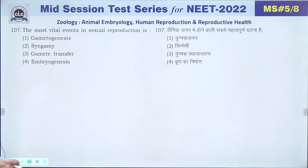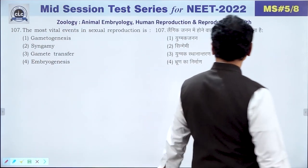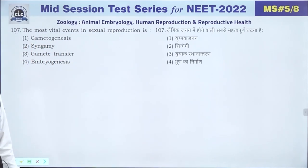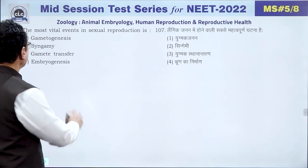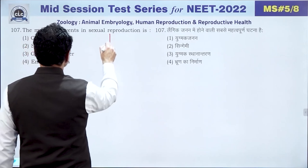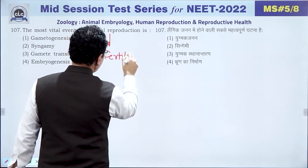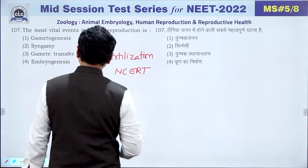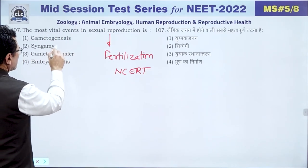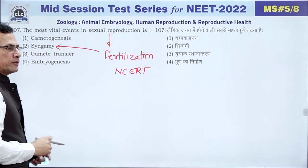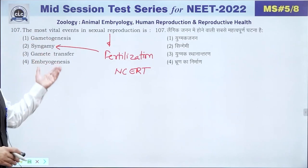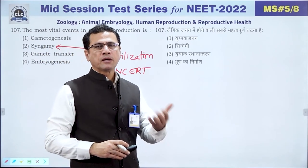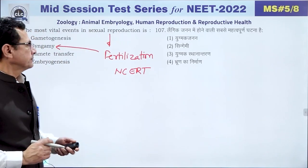Question 107 asks about the most vital event in sexual reproduction. According to NCERT, the most vital event in sexual reproduction is fertilization (syngamy). Although all events are important, fertilization is most important because without it, the next generation cannot be formed. The answer is 2.